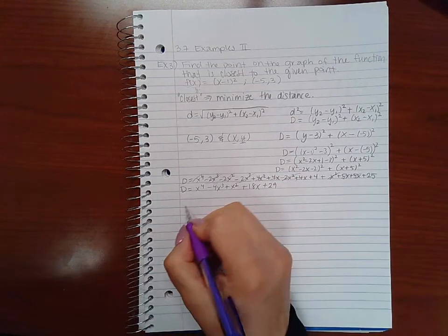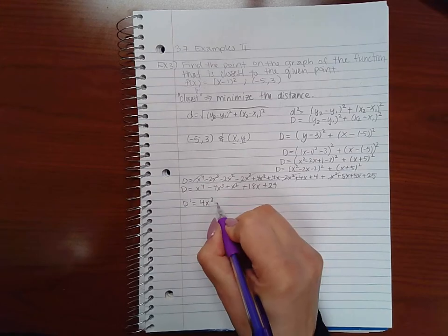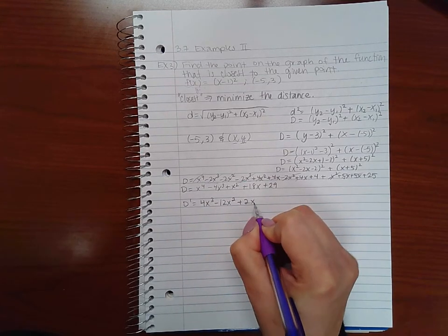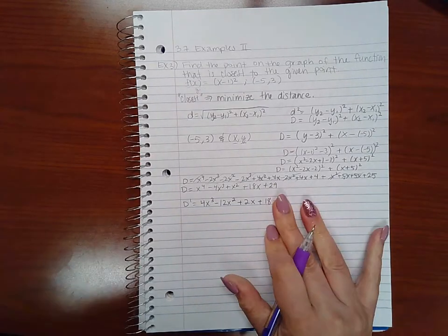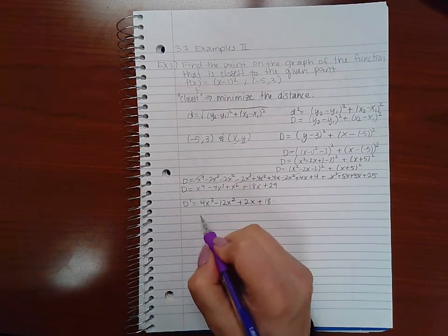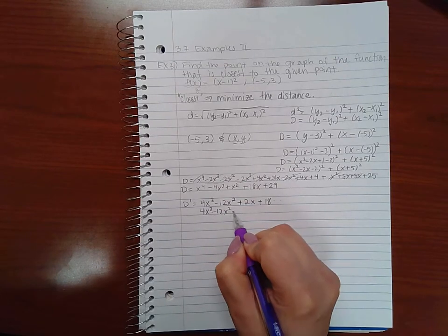So this is the function that I need to take the derivative of. When I do that, I get 4x cubed minus 12x squared plus 2x plus 18. Then I need to set this equal to 0 to find my critical values.